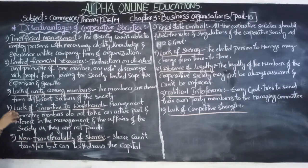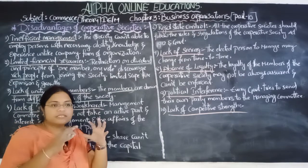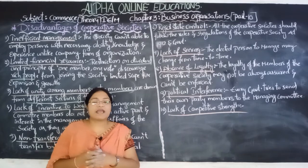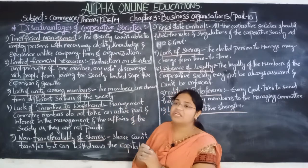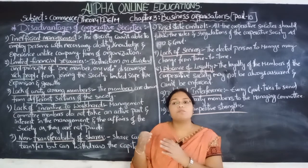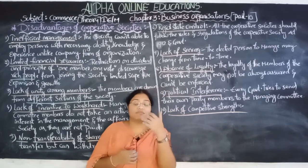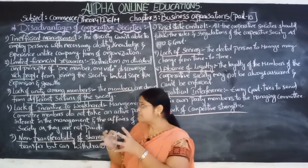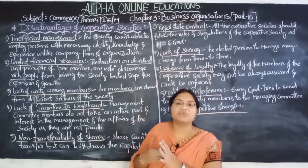The next disadvantage is lack of unity among the members. The members of cooperative societies belong to different sections of society, so they do not have a similar mindset, similar attitude, or similar character. That is why it becomes very difficult to form unity among them. In joint stock companies, there is unity among members because they all belong to one particular section, but in cooperative societies members belong to different sections, resulting in an absence of unity.